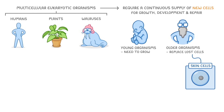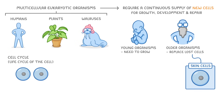The process through which these cells are generated is known as the cell cycle, and it can be thought of as the life cycle of the cell, from the time it was made to the time it divides into two new cells.